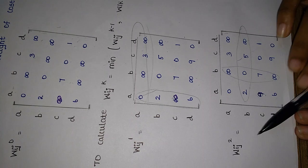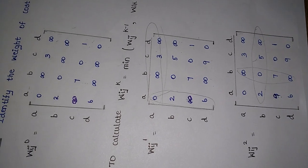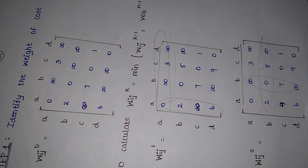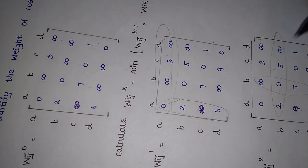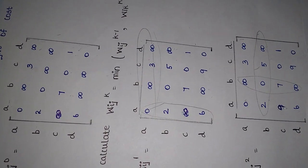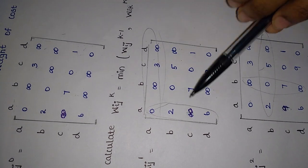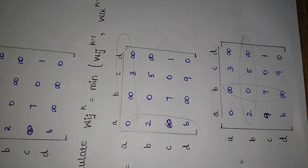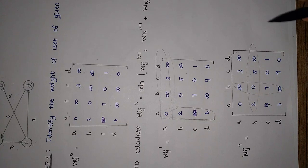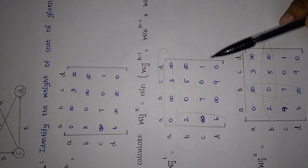For W[i][j][2], we consider the second row and second column. 2 plus infinity is infinity, but we have 0 — write 0. 5 plus infinity is infinity, but we have 3 — write 3. Infinity plus infinity is infinity — write infinity. 7 plus 2 is 9, which is less than infinity — write 9. 2 plus infinity is infinity, but we have 6 — write 6. 7 plus 5 is 12, but we have 0 — write 0. 7 plus infinity is infinity, but 1 is less — write 1. Infinity plus infinity is infinity, but 0 is less — write 0.